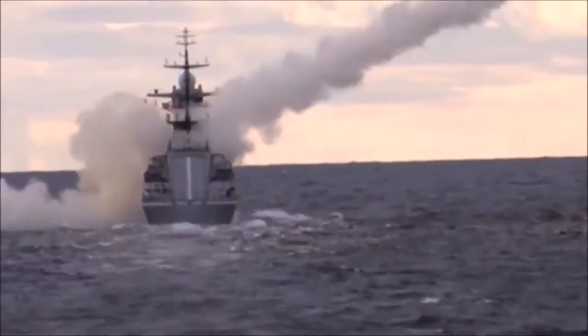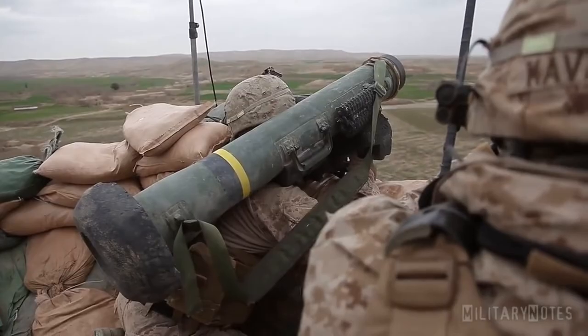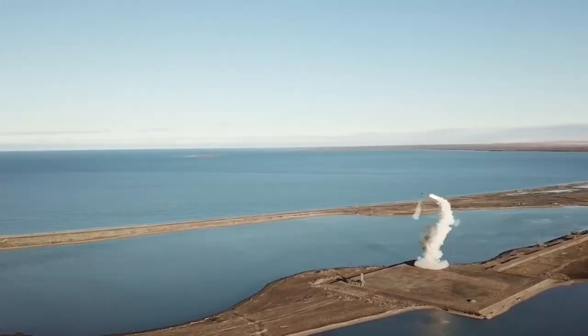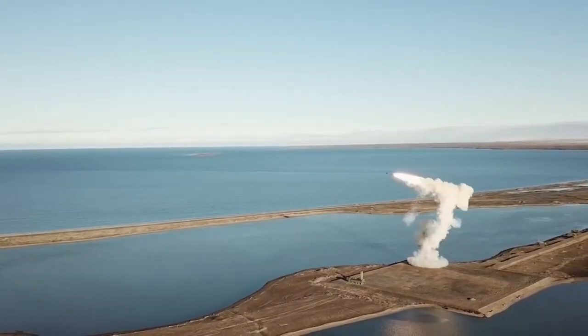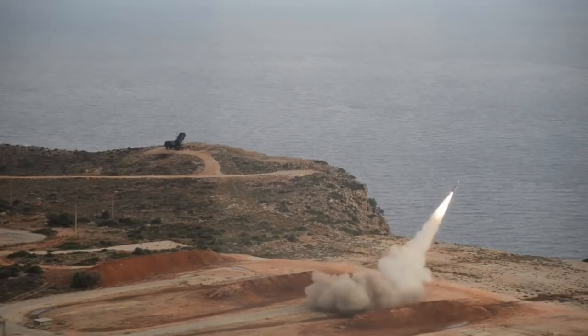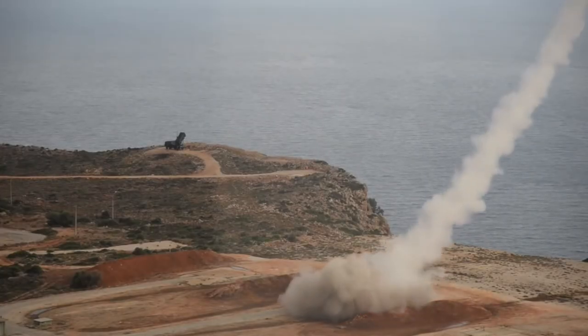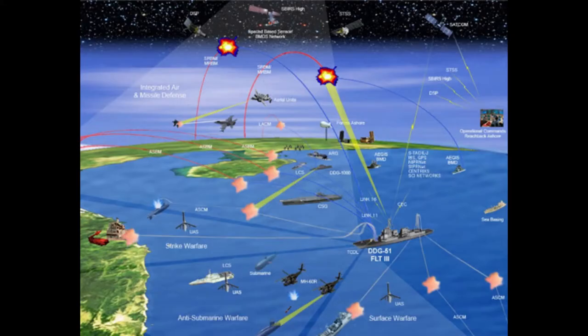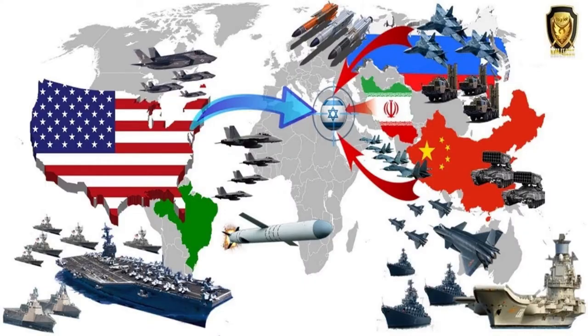Examples of A2AD are anti-ship, anti-tank, layered coastal defense, and layered air defense. One of the most recognized forms of A2AD is integrated air and missile defense, a prominent concept used by many countries to include the United States, Russia, China, and Israel.